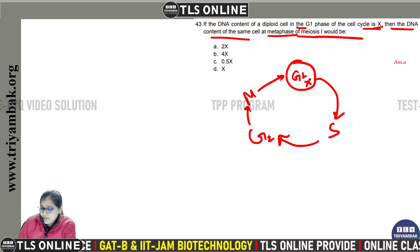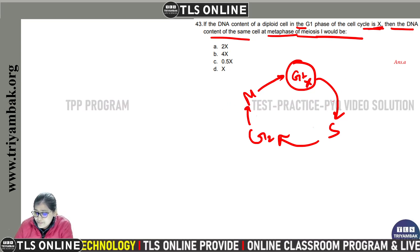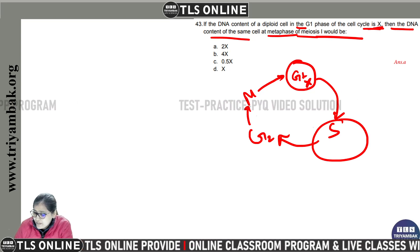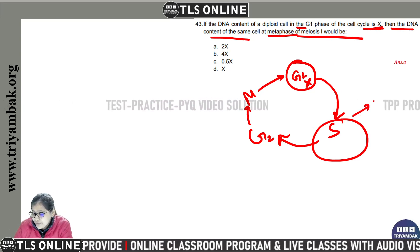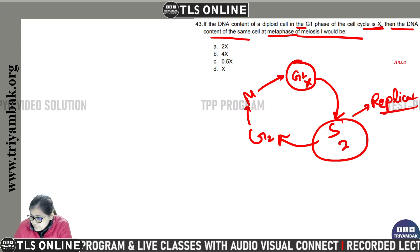G1 content is x. In S phase, replication hoota hai. S phase mein replication hooga to ye DNA content kya ho jayega - double ho jayega, 2x ho jayega.